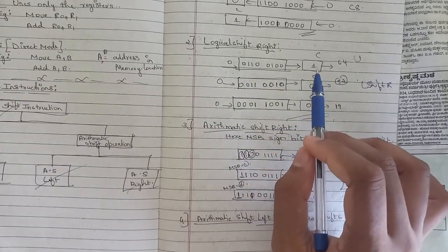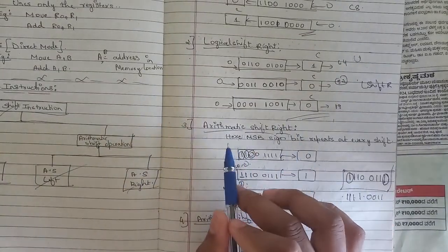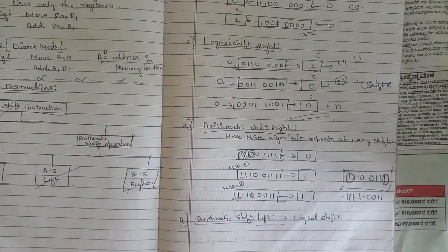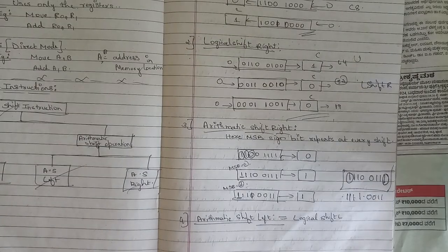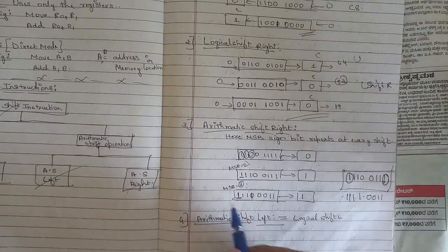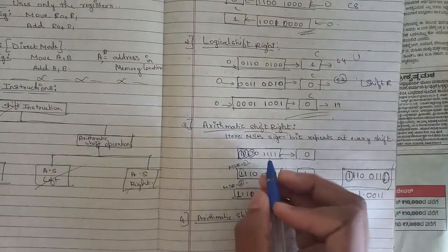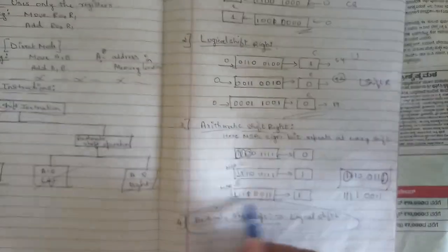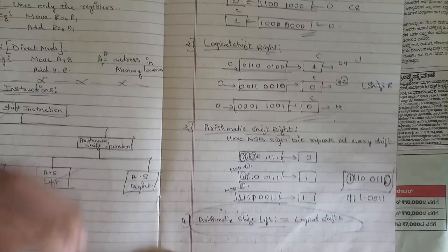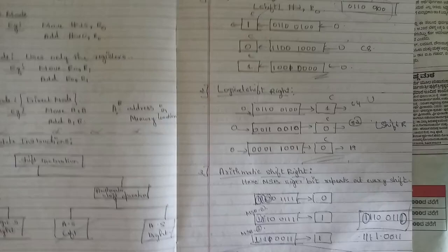For arithmetic shift right, the MSB sign bit repeats at every shift. Whatever the MSB sign bit is, it repeats at every position — for example, if the MSB sign bit is 1, that 1 repeats to the next positions on the right. Arithmetic shift left is the same as logical shift left with no changes. Please make a note of this important question related to shift instructions.